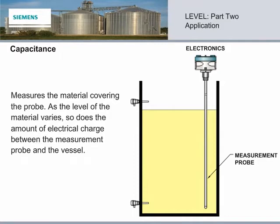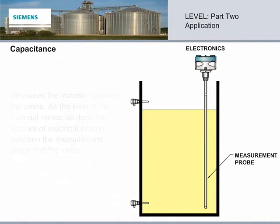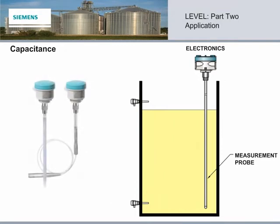Capacitance measures the material covering the probe. As the material level varies, so does the amount of electrical charge between the measurement probe and the vessel. This technology is used in both continuous and point level devices. Continuous level is based on the change in capacitance. For point level, a switch point is determined based upon the delta of the dielectric constant between two materials — for example, air and liquid, or oil and water.